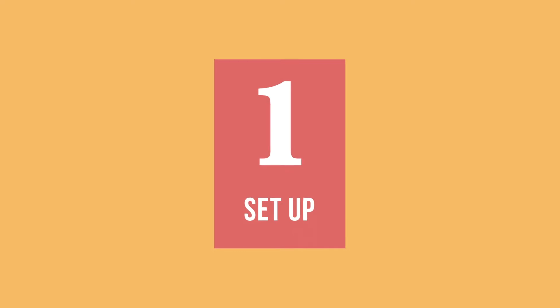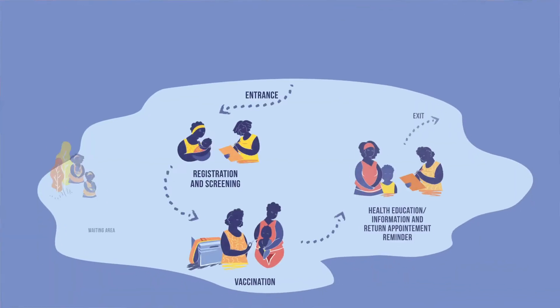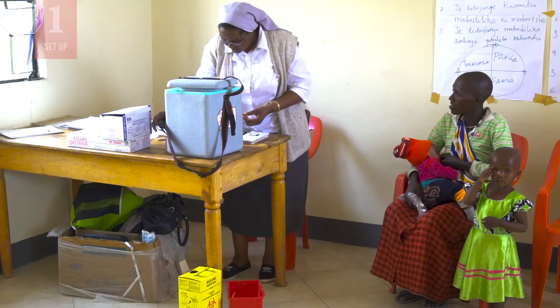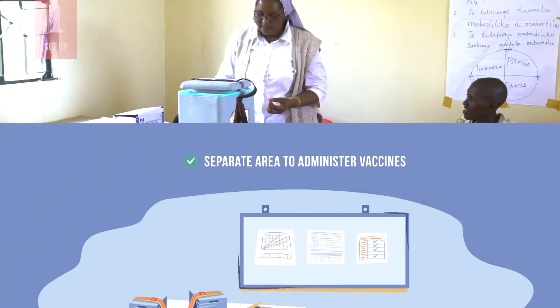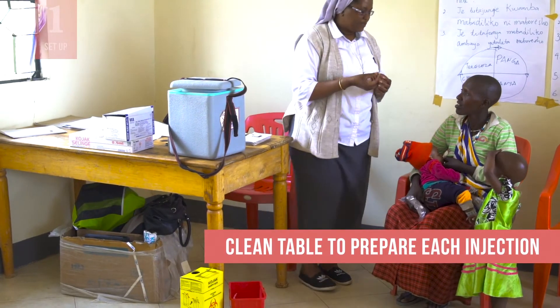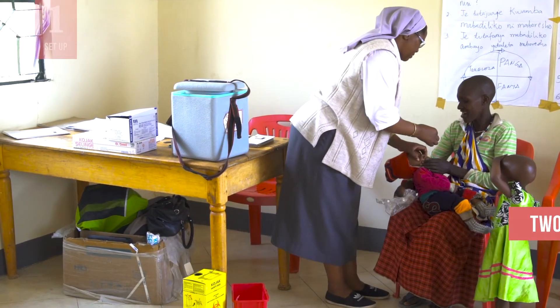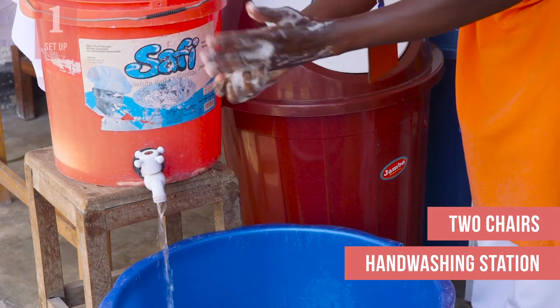First, evaluate how health workers set up the immunization site. Is there a sheltered or shaded waiting area for caregivers and a separate station for registration and screening? Is there a separate station to administer vaccines? Is there a clean table to prepare each injection to avoid contamination? Are there two chairs for the health worker and caregiver and a hand-washing station?